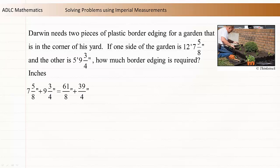Recall that you can multiply the whole number by the denominator, and add the numerator to determine the new numerator of the improper fraction. 7 times 8 plus 5 is 61, so the first improper fraction is 61 eighths. 9 times 4 plus 3 is 39, so the second improper fraction is 39 fourths.